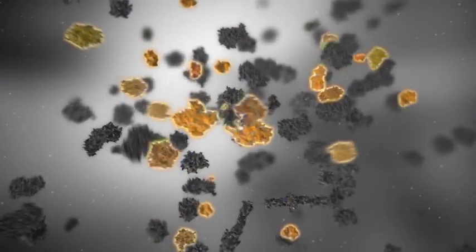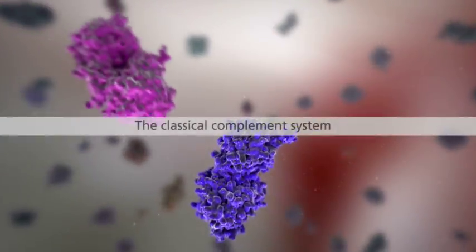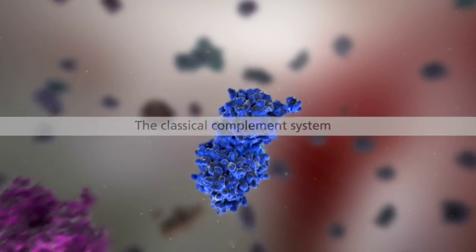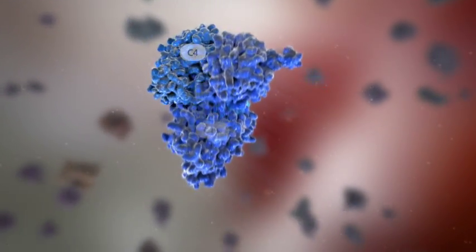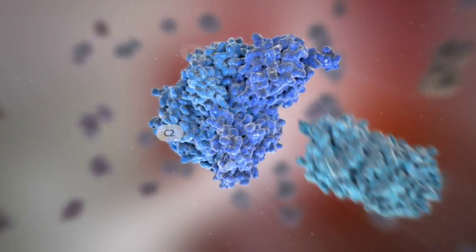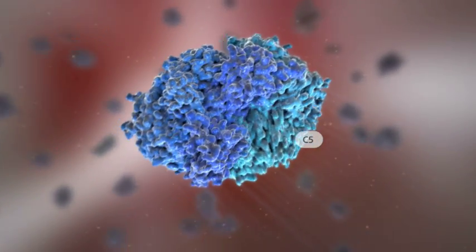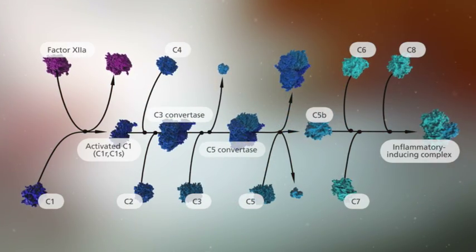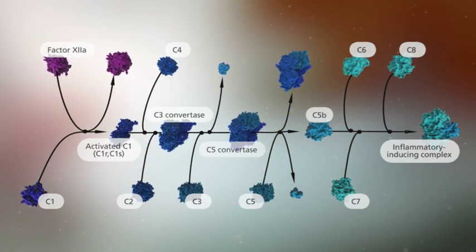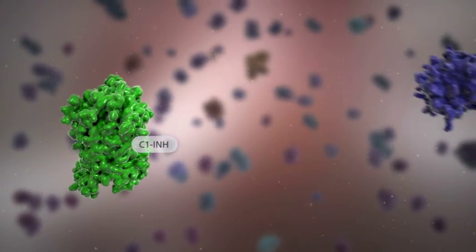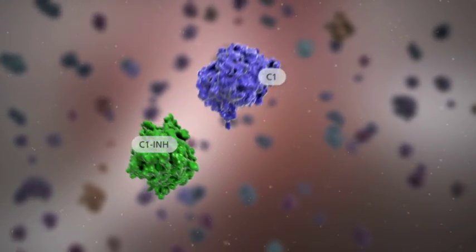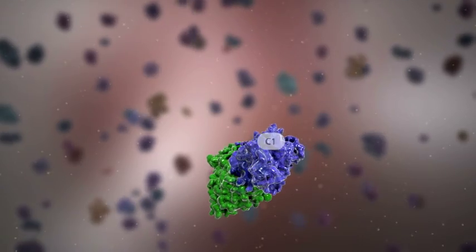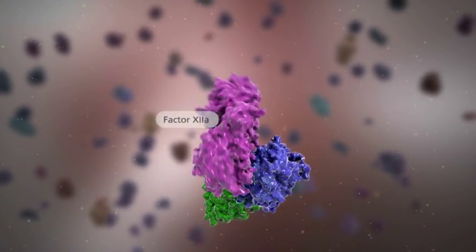In the classical complement system, activated C1 leads to the cleavage of C4, C2, C3, and C5 to produce proteolytic fragments and inflammatory-inducing complexes. C1 inhibitor inactivates C1, and thus stops the production of proteolytic fragments and inflammatory-inducing complexes, which in abundance can damage normal cells and tissues.